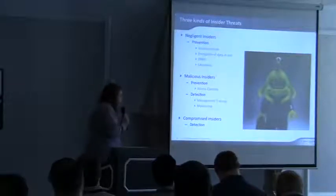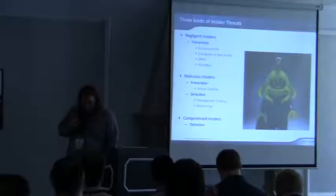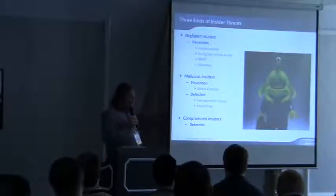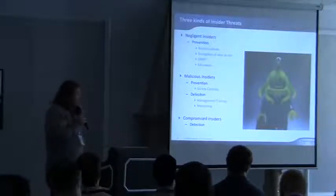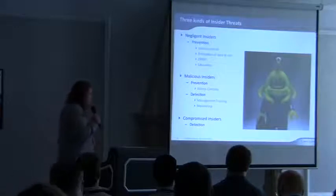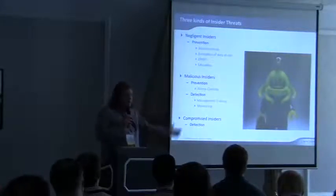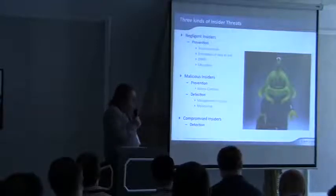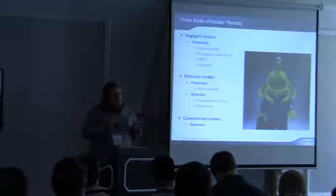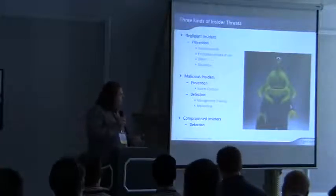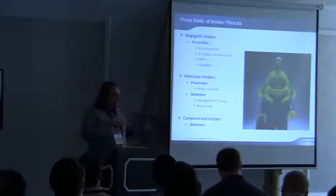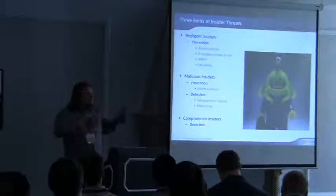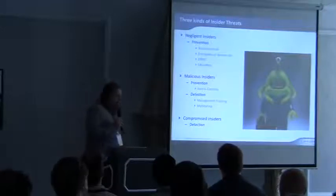Let's sketch out what you can do about these three classes of insiders. For negligent insiders, it's really about prevention. Access controls can help if people don't have access to things they don't need. Encryption of data at rest is useful — if they leave a laptop on an airplane you may not have to disclose the loss. DRM I'm not a huge fan of as a security measure since it's fundamentally flawed — if you want to subvert it you'll succeed — but in a context of just keeping people honest, it could reduce incidents.